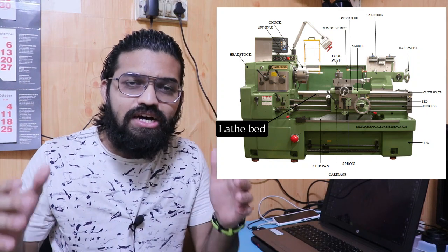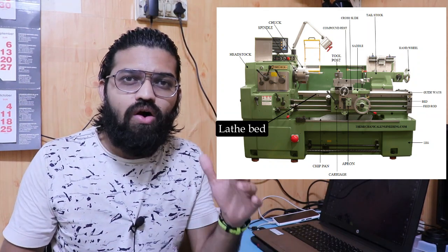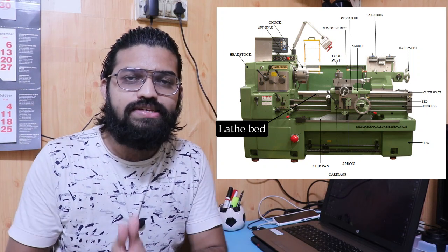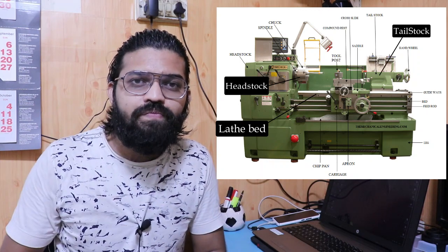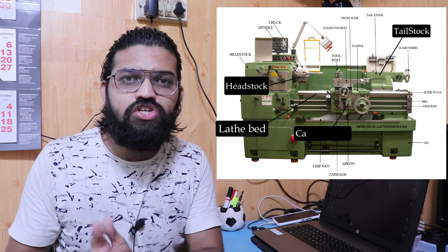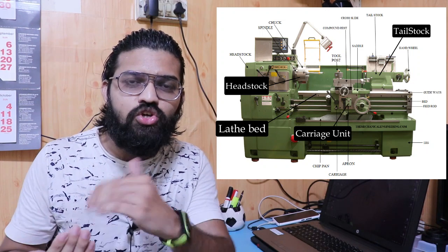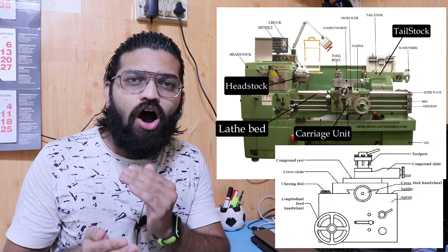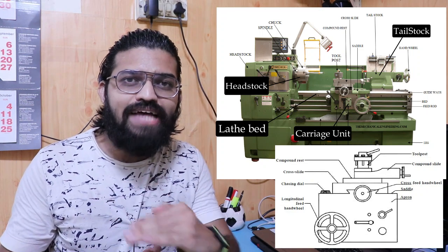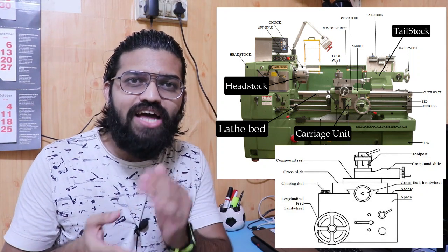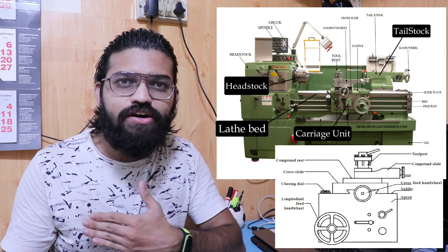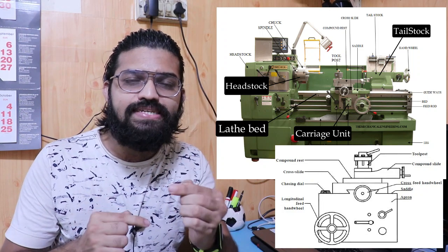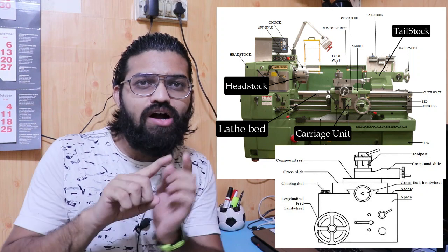First of all, at the center, the lathe machine has the lathe bed. The lathe bed is an important component and it supports all the major instruments and components on it, such as the headstock. At the center there is a carriage — the carriage is a complete unit consisting of the apron, and on that apron there is the saddle, and on the saddle there is the cross slide for the cross movement of the tool.